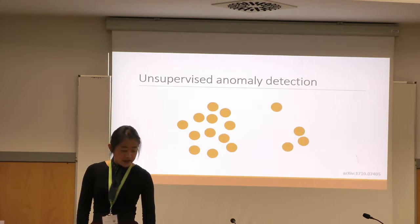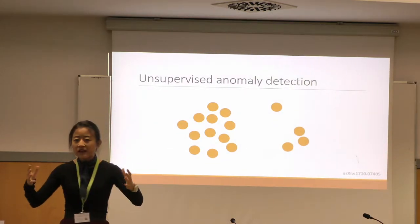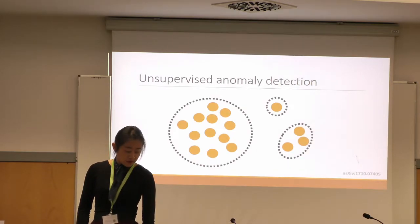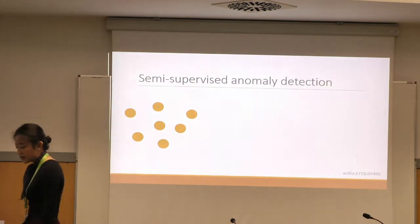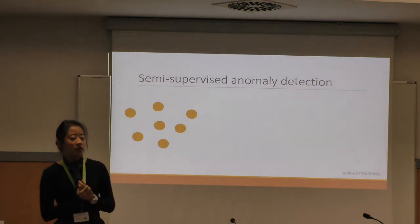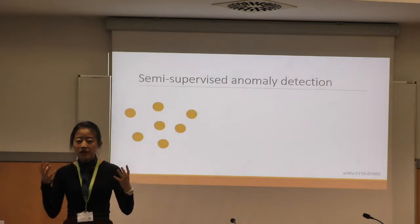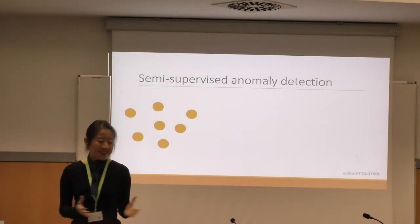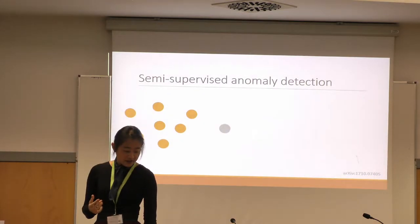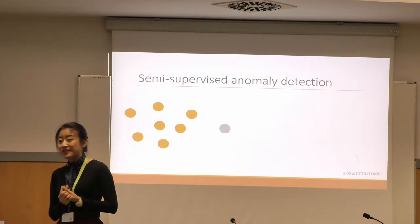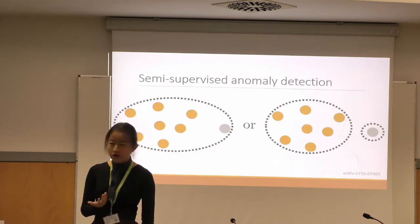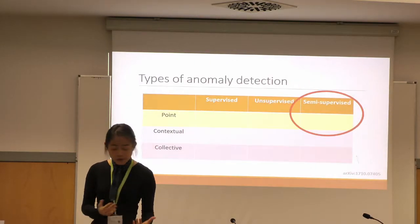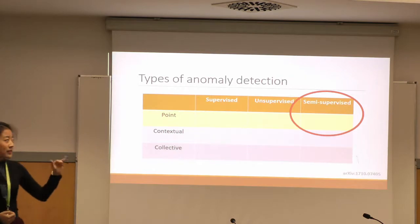Then we have unsupervised anomaly detection, where we're given a bunch of unlabelled data and we want to cluster it. And then we get to semi-supervised, which is the more common type of anomaly detection where you're given a lot of information on the normal data. For aircraft engines, most of the time they're working well, so you have a lot of data on normal operating parameters, but hopefully you don't have a lot of data on when things fail. You want to ask: if you're given a new data point, does it belong to the normal class? We will concentrate on point anomalies in the semi-supervised setting, as these are the simplest.